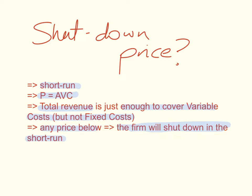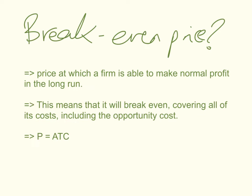The shutdown price occurs at the level of output where price equals average variable cost in the short run. The second concept is that of the break-even price. This is the price at which a firm is able to make normal profit in the long run — unlike the shutdown price, this concept applies in the long run. This means that the firm will break even; it will cover all of its costs, including its opportunity costs or its implicit costs.